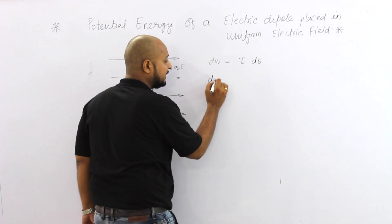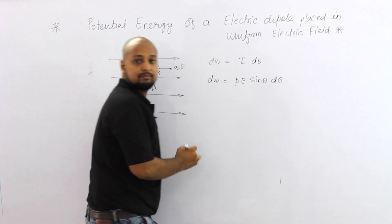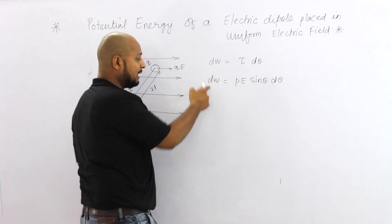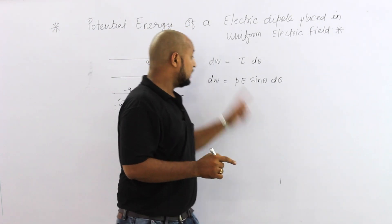Then we will take the value of tau. Tau value is PE sin theta d theta. Now what do we need to do? Integrate.